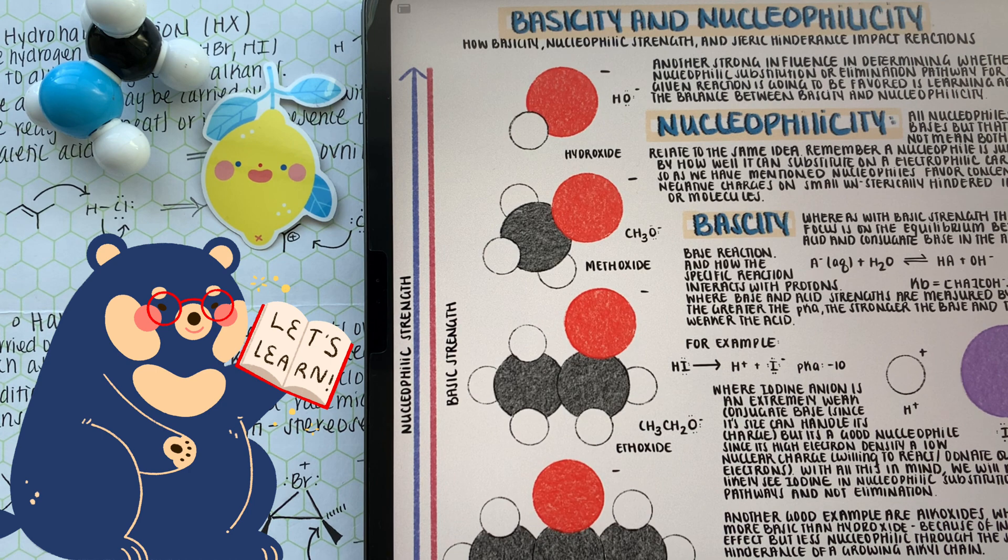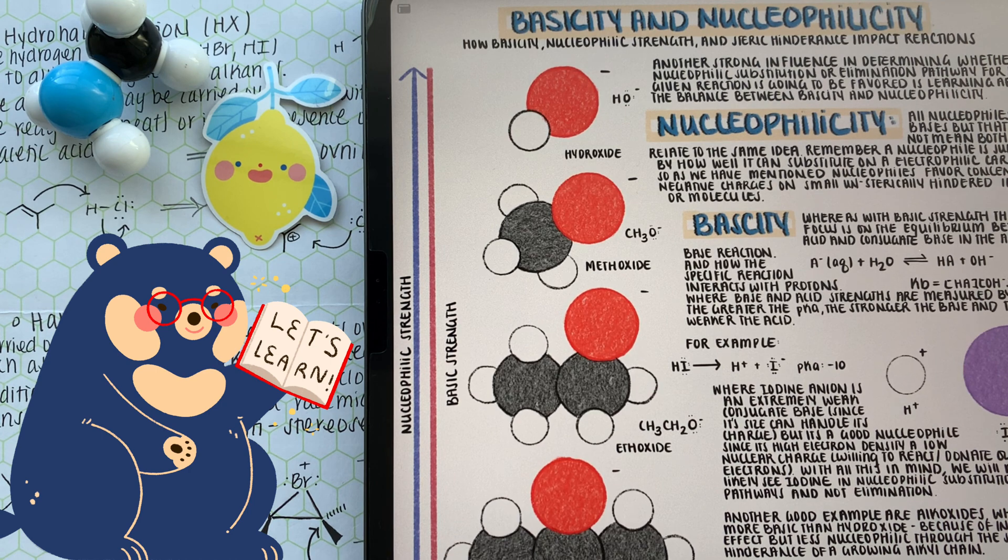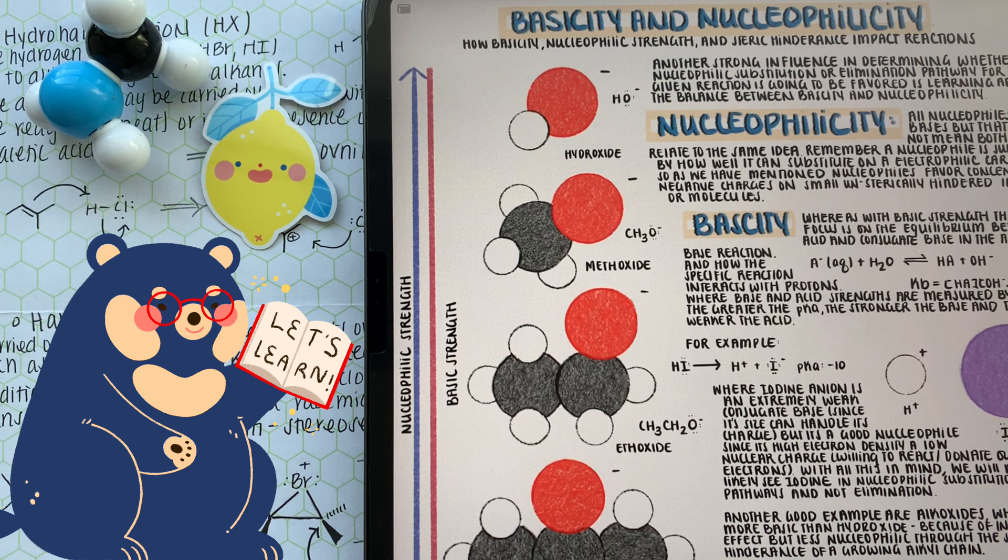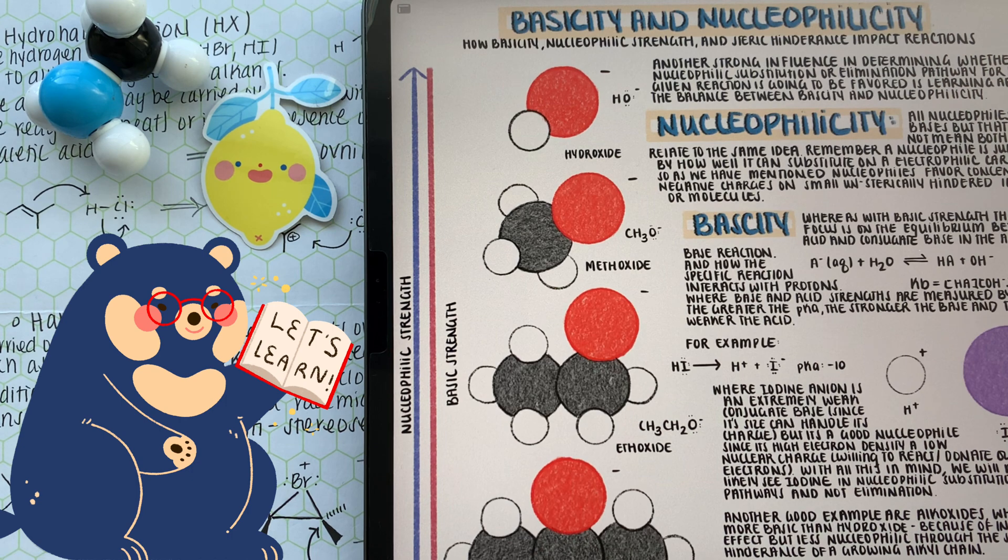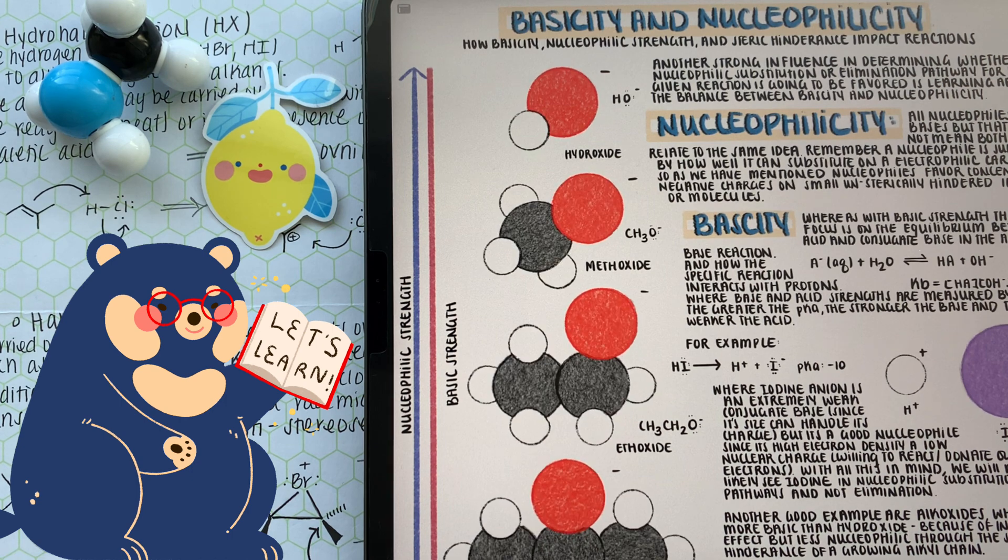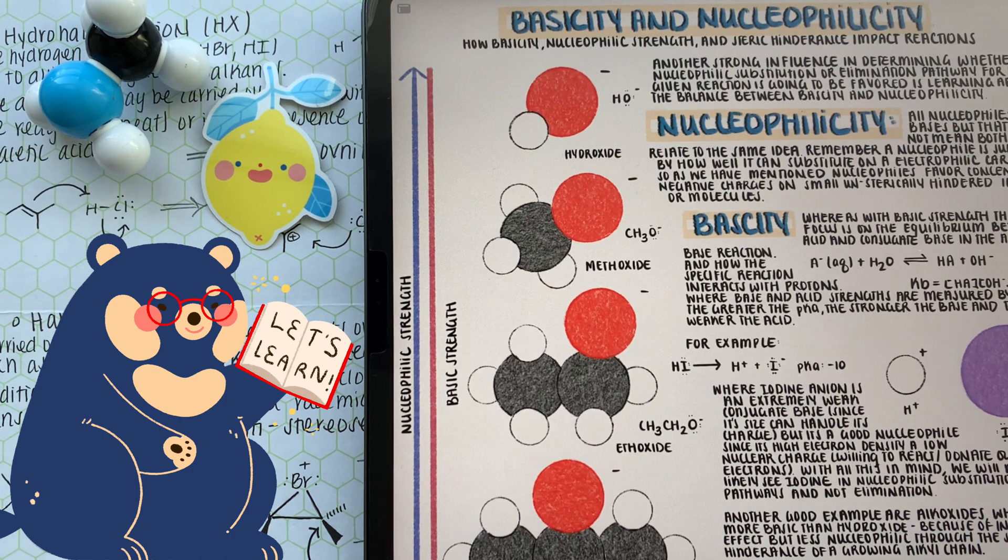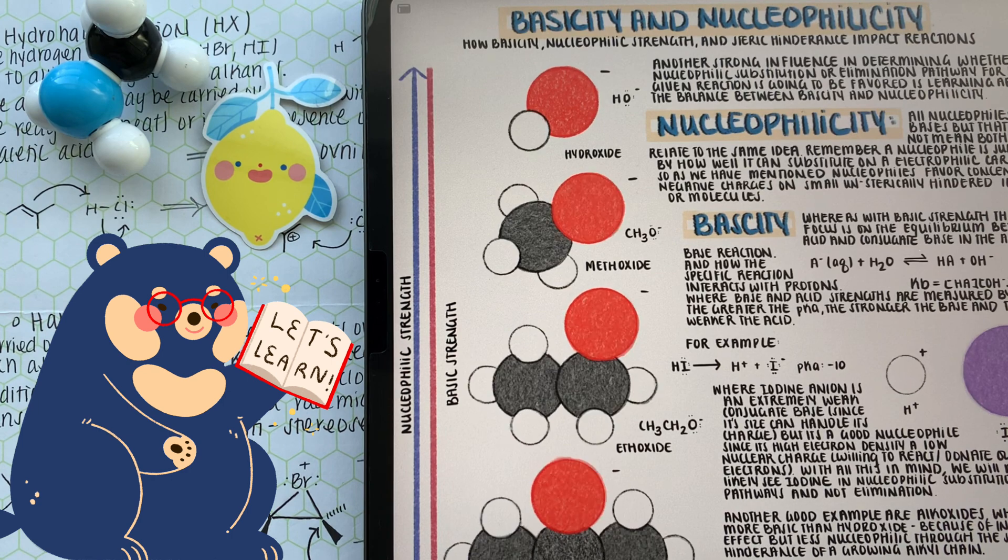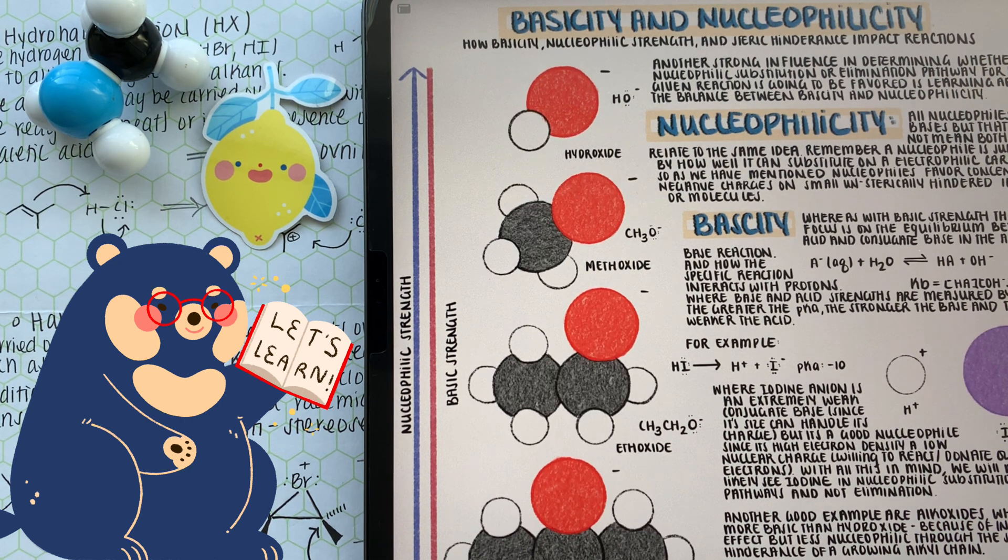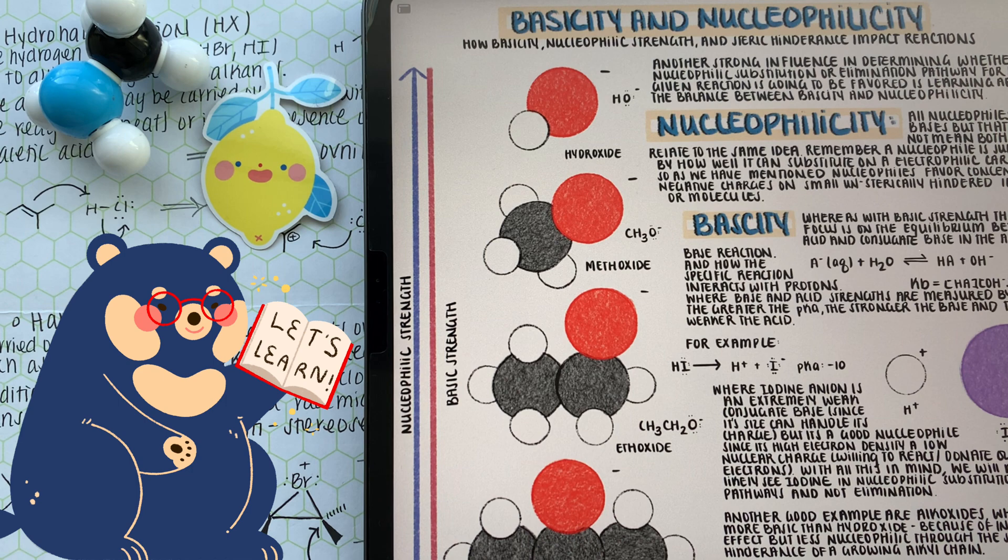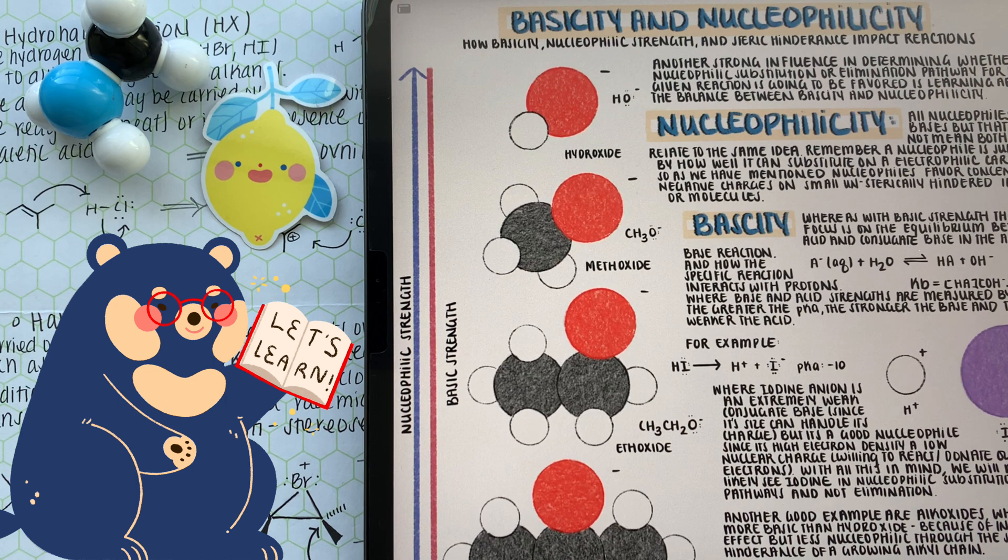We talked about some of the features that benefit a really good nucleophile. And when it comes to measuring the strength of a base, this is when we talk about acids and bases again. For example, iodine is a conjugate base of a strong acid, hydroiodic acid. So that means that it's a weak conjugate base. So as a base, iodine is not going to function well, but it's a really good nucleophile. So we might see it in nucleophilic substitution, but not elimination.